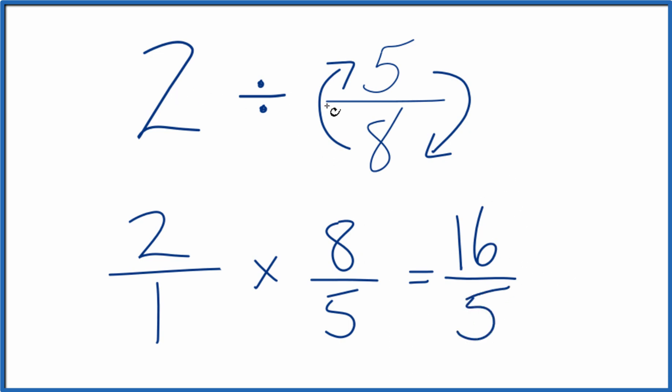So we end up with 2 divided by 5 eighths equaling 16 fifths. This is an improper fraction because the numerator is larger than the denominator.